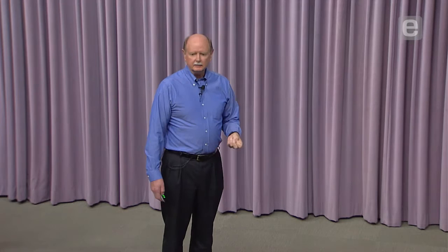The person most responsible for starting the school is Larry Milas, who said there's a lot of unhappiness about the way engineering is taught. The principal advisors were Joseph Bordogna, the chief operating officer at NSF, who ran the Engineering Education Coalition's Program for a decade, spent over $100 million trying to motivate universities to rethink engineering and gave up because they're not changing. The other person is John Prados, who was the chair of the accreditation board that changed the entire accreditation criteria. Olin is fully accredited, we've never had any problem with ABET accreditation.